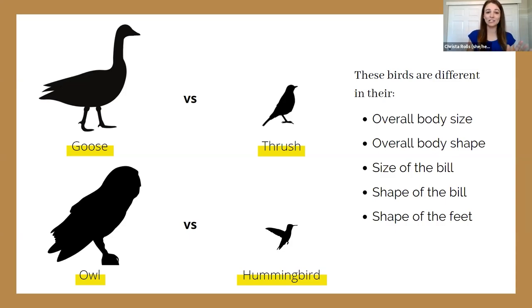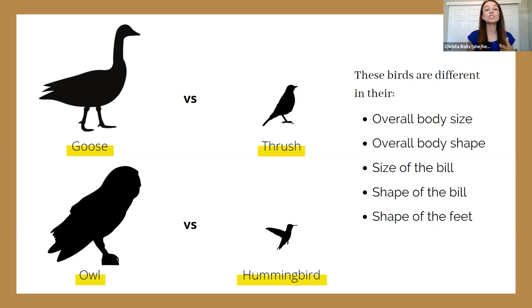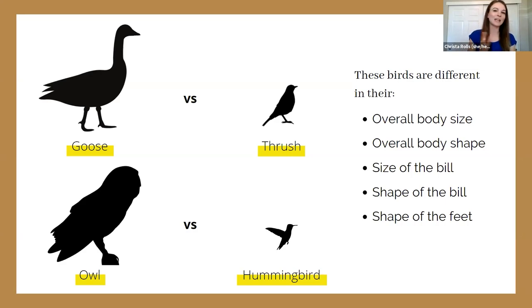I'm using silhouettes here because it's a great way to focus on size and shape without getting hung up on color. Color is very important as one of the keys to bird ID, but when we're looking at size and shape it allows us to focus on what group a bird might be in and the overall impression of the bird, without getting too distracted by color details.